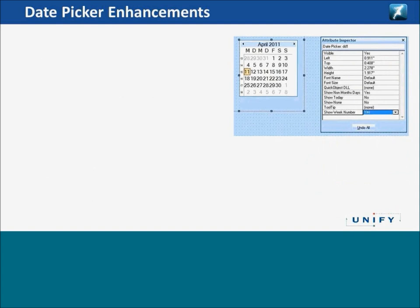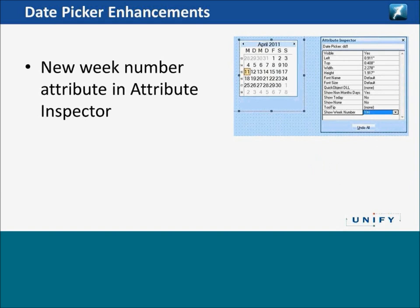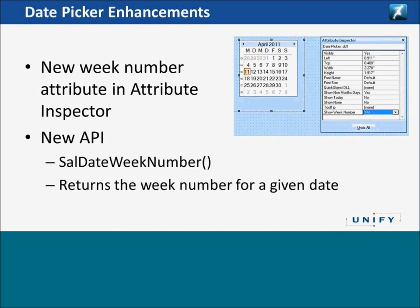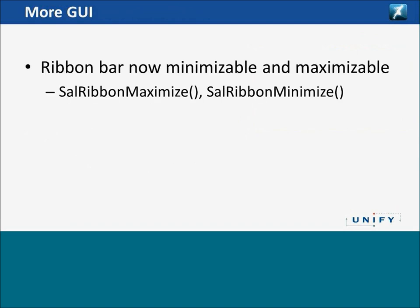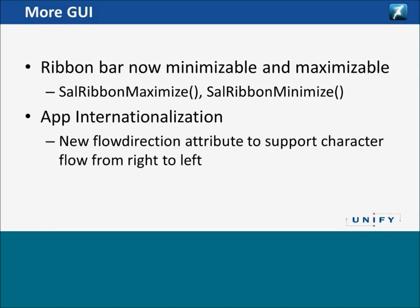Date picker enhancements: you can switch on week numbers in the attribute inspector. Week numbers are mostly the same worldwide but can have slight differences depending on certain years, and that will be configured into this control so you have the right week numbers depending on your area. There's a new API SaalDateWeekNumber, which returns the week number for a given date. Additionally, you can maximize and minimize the ribbon bar using two new APIs: SaalRibbonMaximize and SaalRibbonMinimize. Application internationalization uses the new flow direction attribute to support right-to-left text flow.